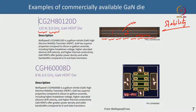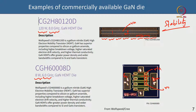This could also be a matched transistor, where there is an internal matching network to ensure the die output is 50-ohm matched. This other device from the same company is 8 W at 6 GHz (C-band). Here you can more clearly see gate fingers, drain, and source. There are two via holes visible here — very obviously via holes — and there could also be air bridges on top.